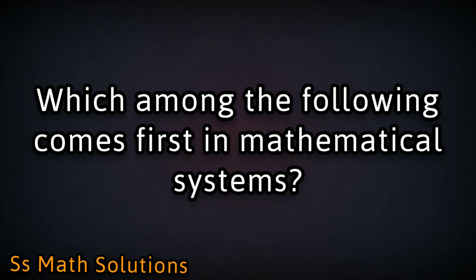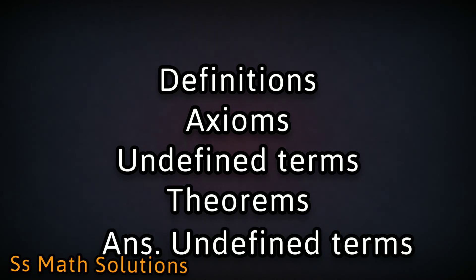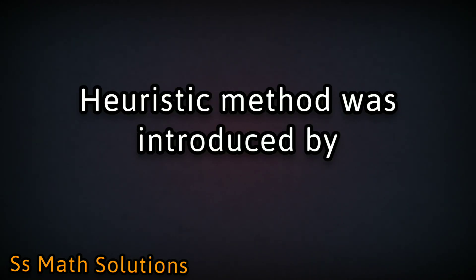Which among the following comes first in mathematical systems? Options: definitions, axioms, undefined terms, theorems. The answer is undefined terms.